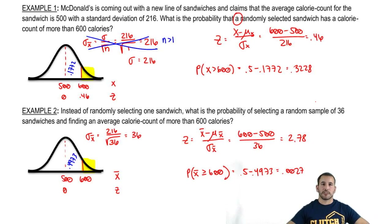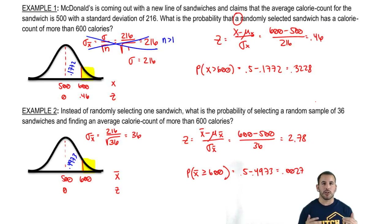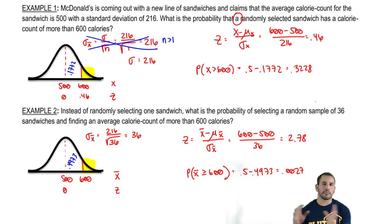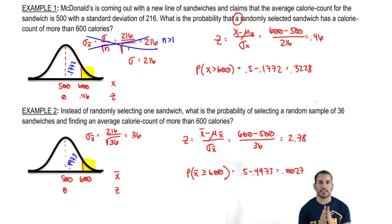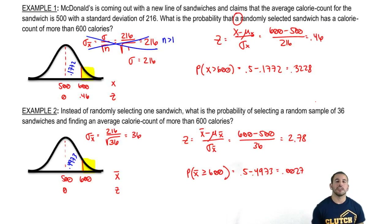So basically, for a large sample you should be right around the mean. As you get smaller and smaller samples, there's more and more variability and it's not as centered around that mean. That's about it for sampling distributions for the mean. Let's go ahead and do some practice problems, and we'll move on to confidence intervals.